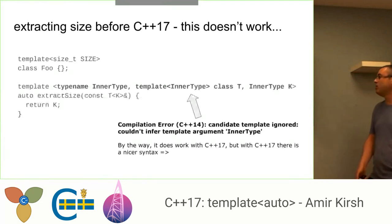Now, we can try that. Let's try that before C++17. Let's do that this way. Let's say that we have a typename inner_type. And then we have a template of inner_type, which is unknown. And then we have the inner_type as an additional template parameter. Now, we do things like that with types, but it doesn't work this way with a non-type. And we get the compilation error: couldn't infer template argument inner_type. Why it couldn't infer that? Because the standard says so. The standard says that the compiler doesn't need to infer that.